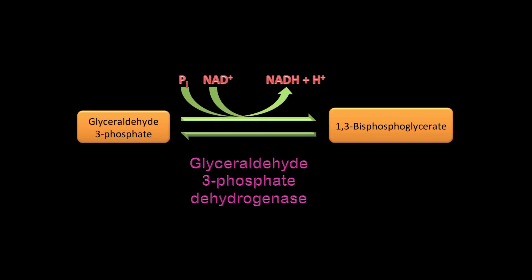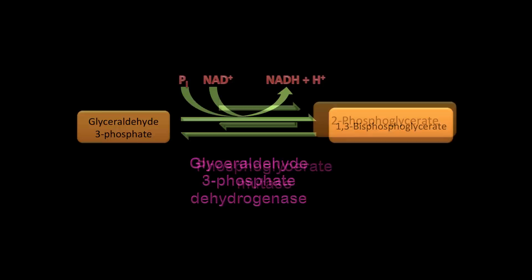This phosphorylation is different compared to hexokinase or PFK1. Here the phosphate is not coming from ATP — it's coming from inorganic phosphate. Normally that would be energetically unfavorable, but because oxidation is also taking place simultaneously, it makes the overall reaction favorable.